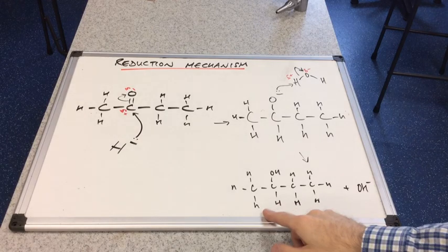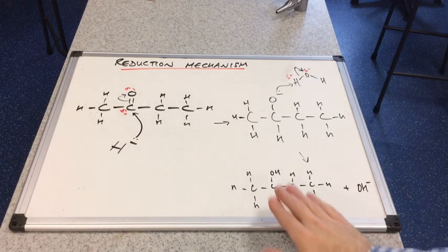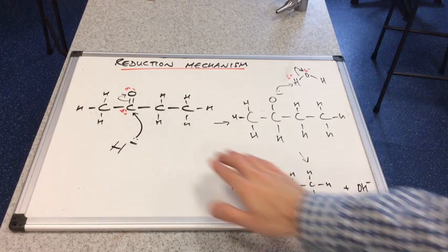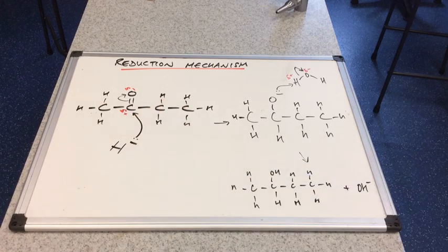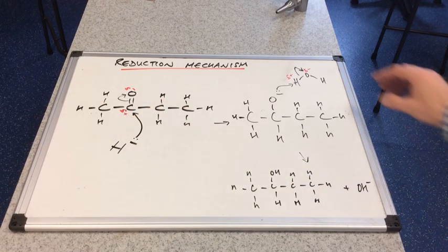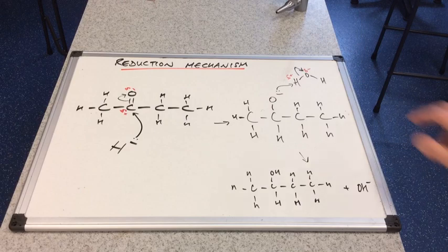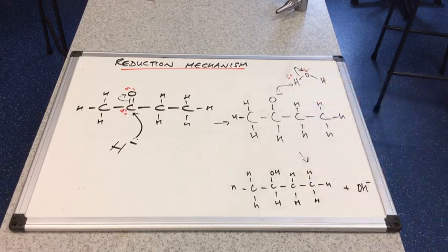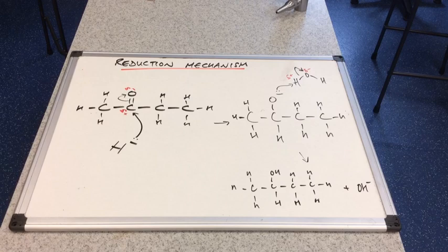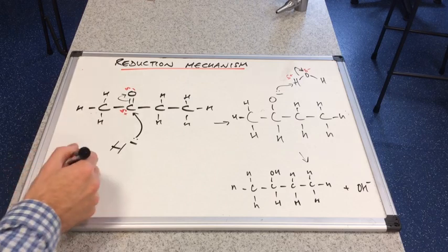And you can see I've drawn up the products there. So we've got the secondary alcohol because this was a ketone that we reduced. And we would make a hydroxide ion from the breaking of this OH bond in the water molecule. But remember in the equation, if we write the chemical equation for that.